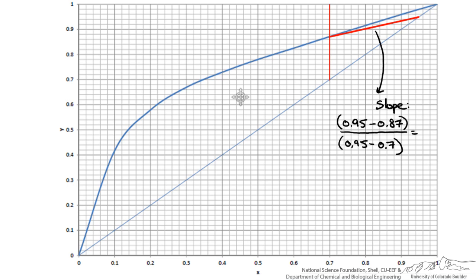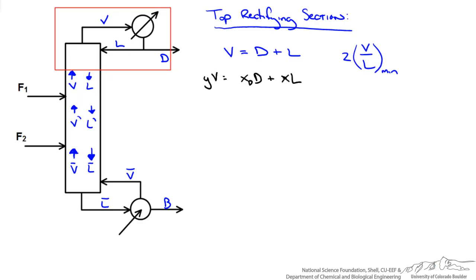So we can determine the slope by just choosing the two points of our intersections and we determine that the slope is roughly about 0.32.